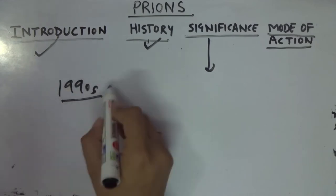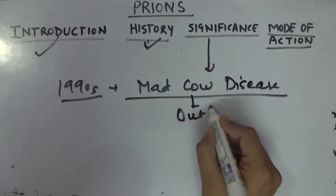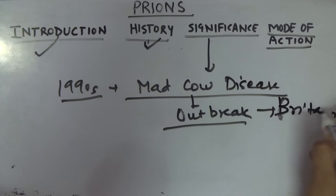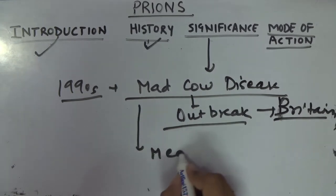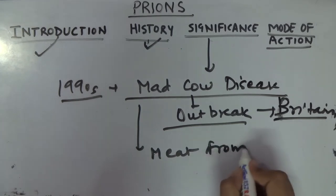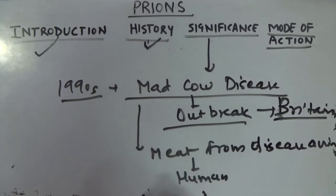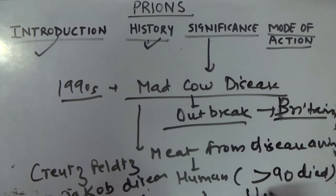In the 1990s, mad cow disease resulted in an outbreak in Britain. It was found that when the meat from diseased cows was consumed by humans, it led to another disease in them called Creutzfeldt-Jakob disease. Due to this disease, more than 90 people died at that time in the UK and France.